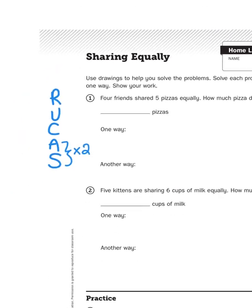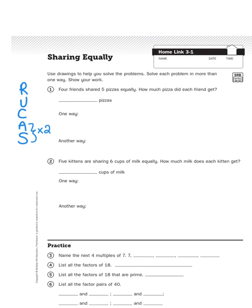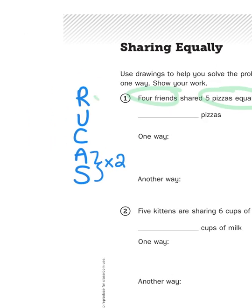Okay, so let's re-read. It says: use drawings to help you solve the problem, solve each problem in more than one way, show your work. It says: four friends shared five pizzas equally. How much pizza did each friend get? So now we have re-read the question. We've underlined the question part of this story problem, and we've circled the important information. There are four friends, and there are five pizzas.